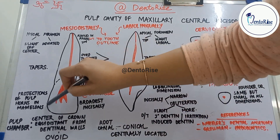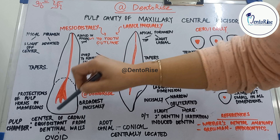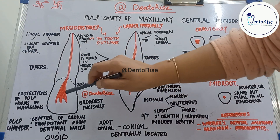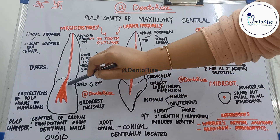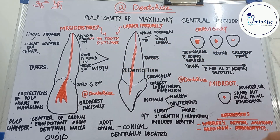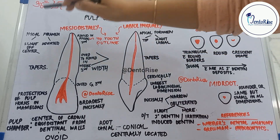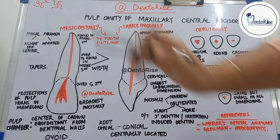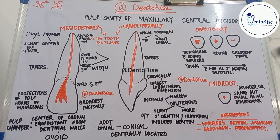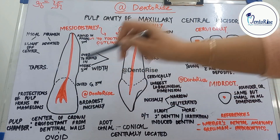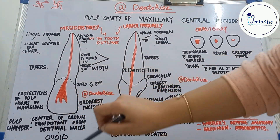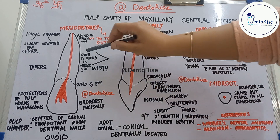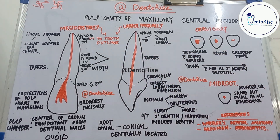Right at the incisal level, we can see projections of the pulp called pulp horns, which are projections of the pulp into the mamelons if they are present. From incisal to cervical, the pulp chamber and pulp canal taper until reaching the apical foramen. The apical foramen mesiodistally is either at the center of the tooth or slightly deviated from it. The cross-section of the pulp chamber mesiodistally is ovoid — ovoid at the cervical third, ovoid to round in the middle third, and round in the apical third.